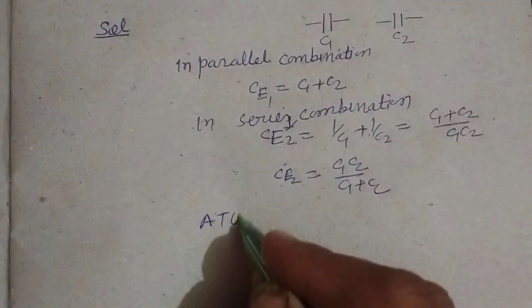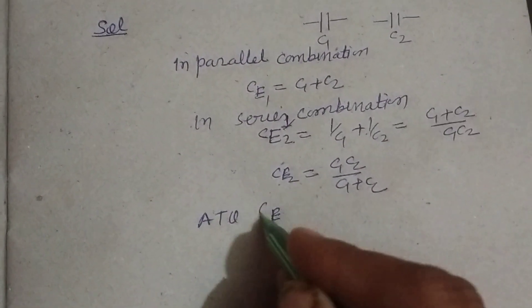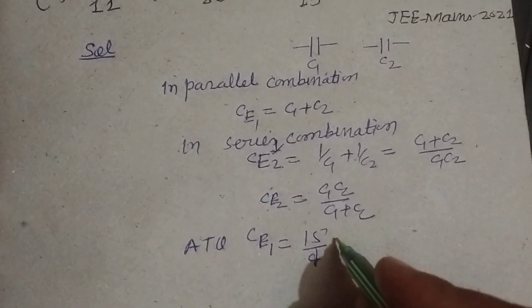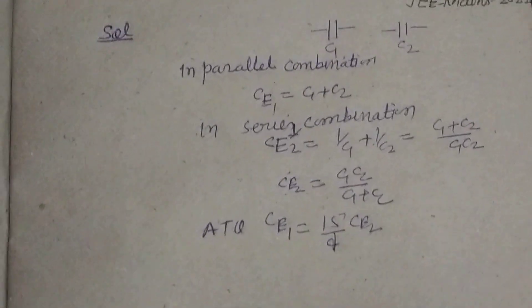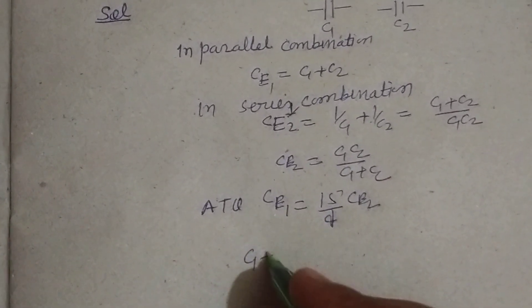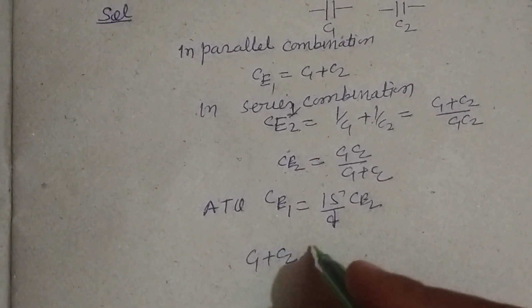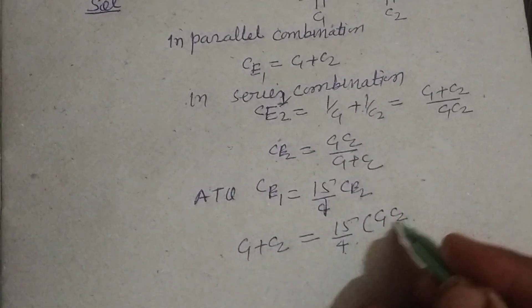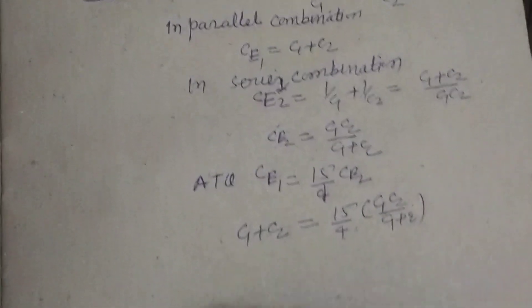So according to the question, Ce1 equal to 15 upon 4 Ce2. So we put C1 plus C2 equal to 15 upon 4, C1 C2 over C1 plus C2. From here,